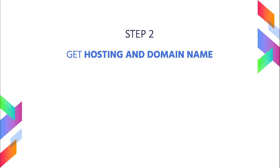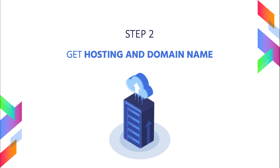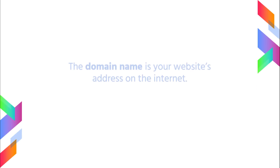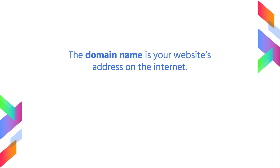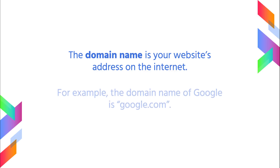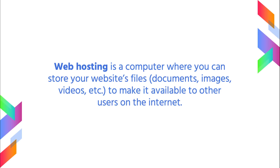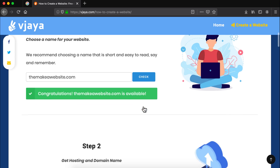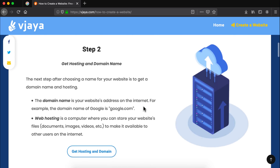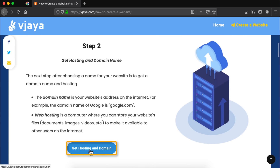The second step is to get a hosting and domain name for your website. The domain name is your website's address on the internet. For example the domain name of Google is google.com and hosting is basically a computer where you can store your website's files to make it available to other users on the internet. Now let's scroll down to step number two and then click on the get hosting and domain button.